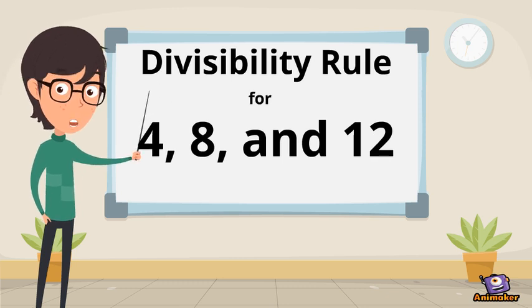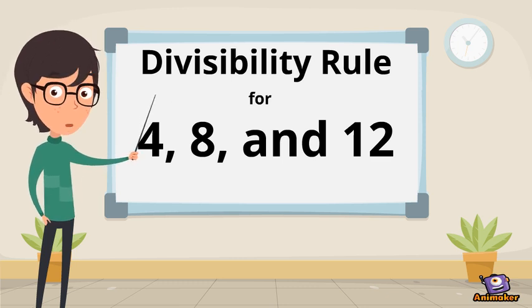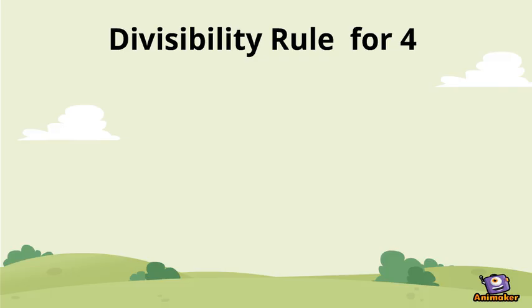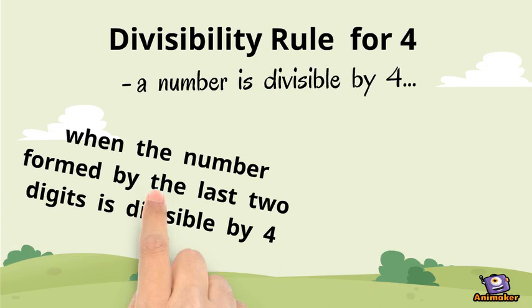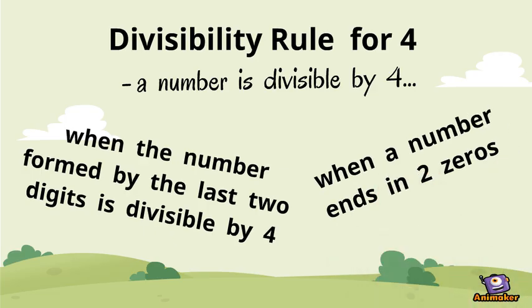A divisibility rule for number 4. A number is divisible by 4 when the number formed by the last two digits is divisible by 4, or when a number ends in two zeros.